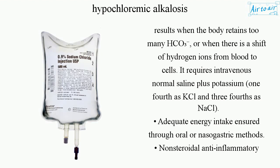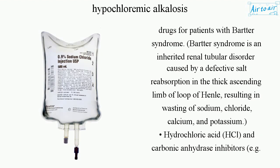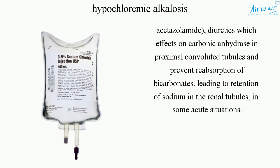IV fluids are given as one-fourth KCl and three-fourths NaCl, with adequate energy intake ensured through oral or nasogastric methods. Non-steroidal anti-inflammatory drugs are used for patients with Bartter syndrome, an inherited renal tubular disorder caused by defective salt reabsorption in the thick ascending limb of the loop of Henle, resulting in wasting of sodium, chloride, calcium, and potassium. Hydrochloric acid (HCl) and carbonic anhydrase inhibitors such as acetazolamide may also be used; acetazolamide acts on carbonic anhydrase in the proximal convoluted tubules to prevent reabsorption of bicarbonates, leading to retention of sodium in the renal tubules.